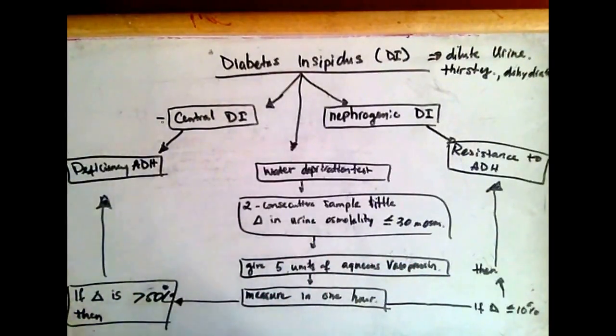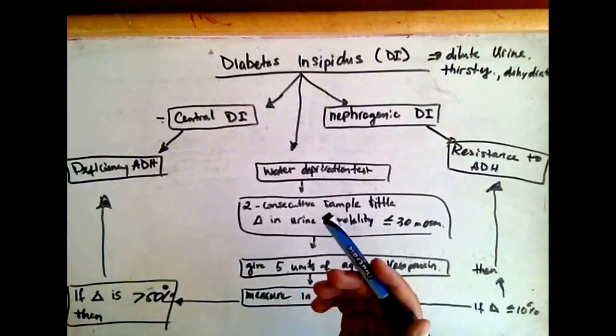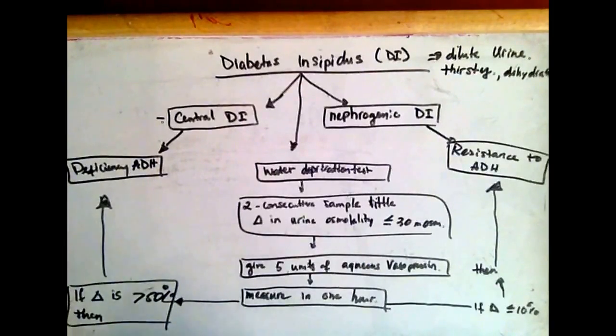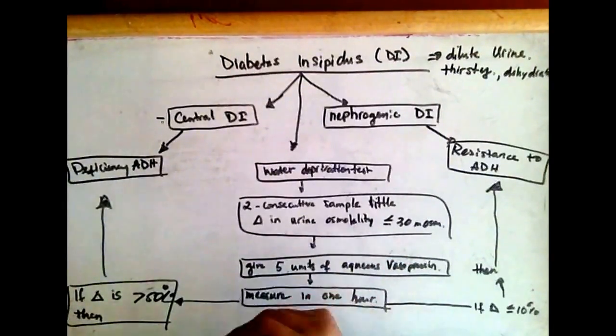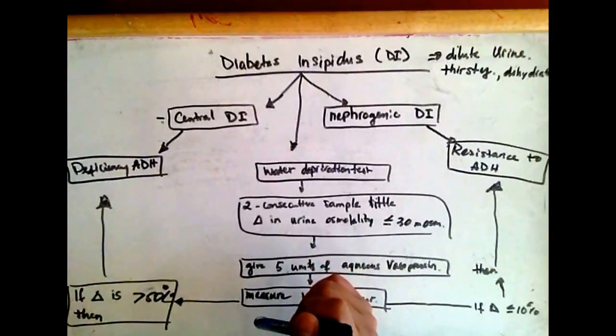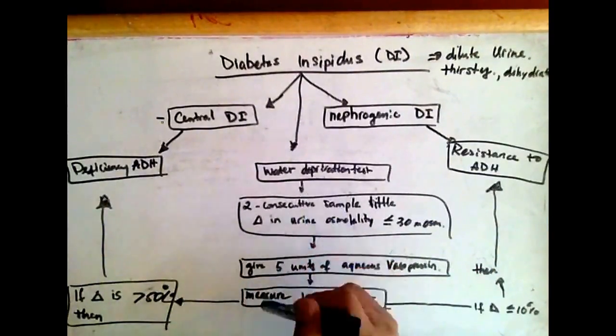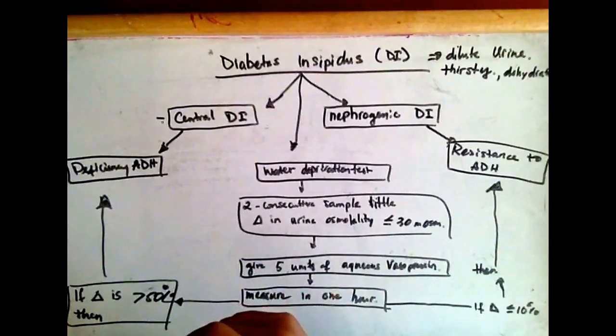then there would be a greater increase, which is more than 50% increase in the osmolality of the urine. The kidney would concentrate the urine more, so we would see a greater increase when there is a lack of ADH.